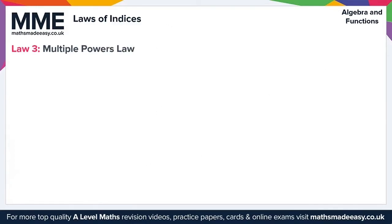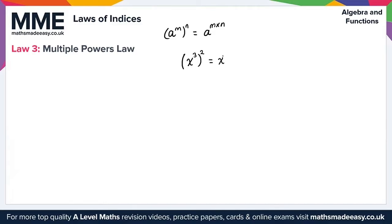Moving on to law 3, the multiple powers law. If we have a to the m raised to the power of n, we can express this as a to the m times n. For example, if we have x cubed raised to the power of 2, we apply the law to write this as x to the 3 times 2, giving us x to the 6.